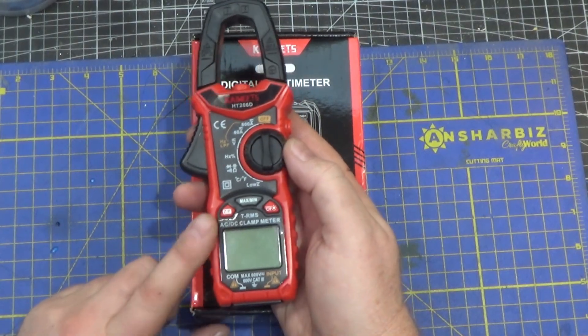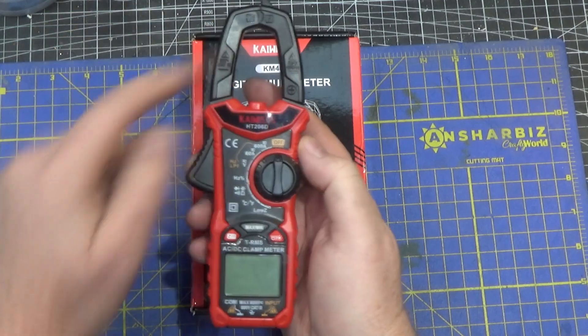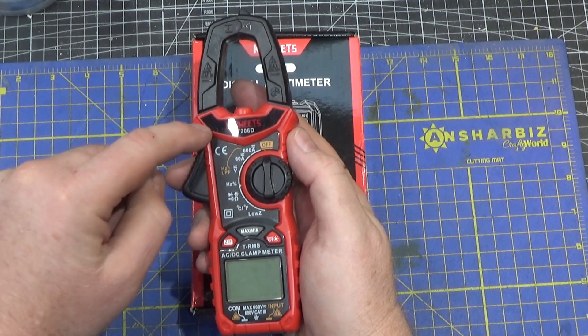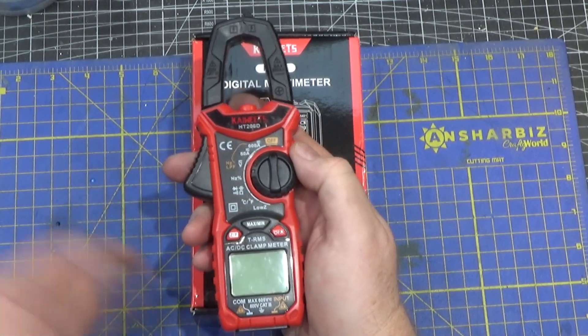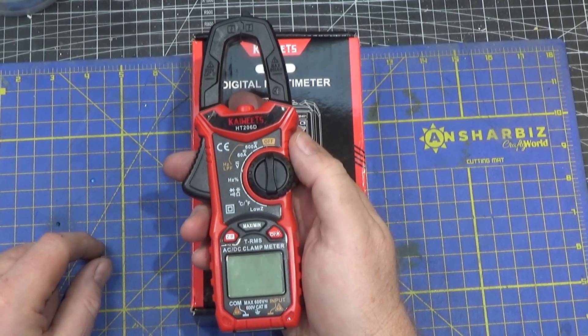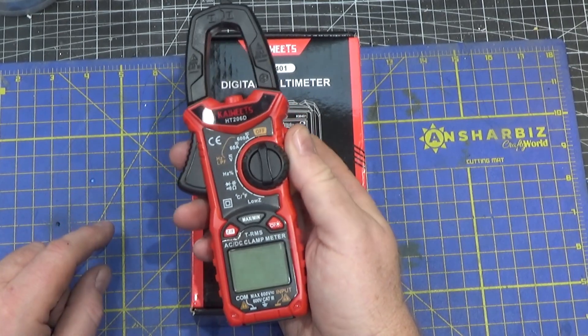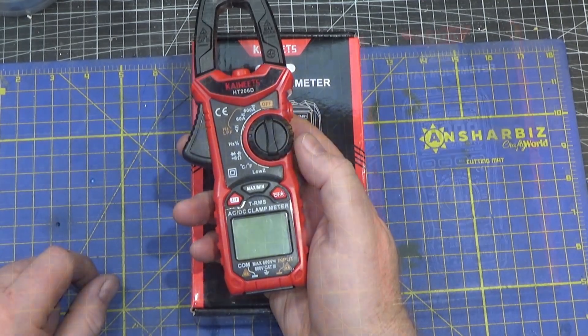I purchased this one on Amazon a couple years ago because it had DC clamp current measurement which is not common except in the higher end multimeters. So this does AC which is common for current measurement in the clamp but DC is rare and I use this all the time. In fact I'm using it right now because my wife's car battery is dead, I'm charging it and I want to see how much current is going into the battery.